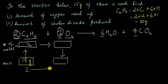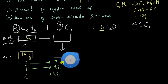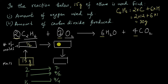We know that two moles of ethane react with seven moles of oxygen. This means one mole of ethane would react with 7/2 moles of oxygen, and so half a mole of ethane will react with 7/4 moles of oxygen. So we must have used 7/4 moles of oxygen.